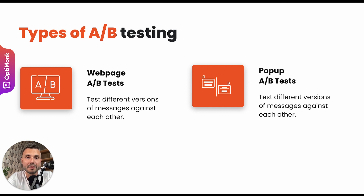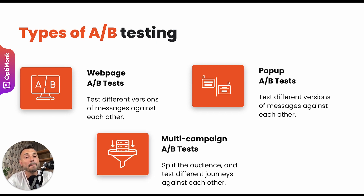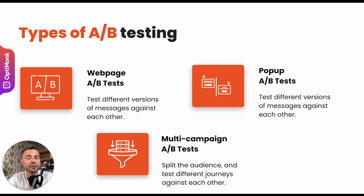Another type is pop-up A/B testing — having different versions of overlays and pop-ups to see which one converts better. We also have what we call multi-campaign A/B test or journey A/B test, where we split visitors into two parts and show one part a totally different journey: different pop-ups, different landing pages, different messages than the other part. This is the most complex A/B testing technique you can run on a website.